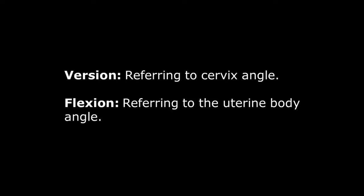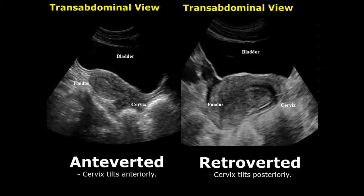When the term version is used, it refers to the angle of the cervix, and when the term flexion is used, it refers to the angle of the uterine body. The first image is the anteverted uterus.